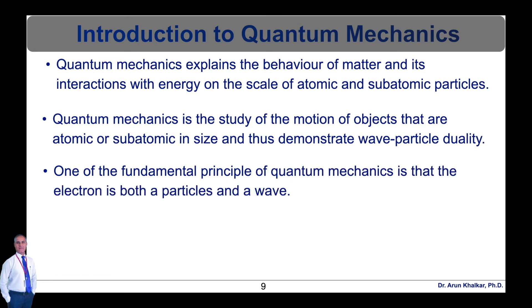In classical mechanics, the size and mass of the objects involved effectively obscure any quantum effects so that such objects appear to gain or lose energies in any amount. Particles whose motion is described by quantum mechanics gain or lose energy in small pieces called quanta.